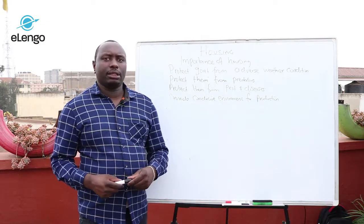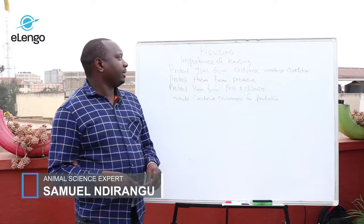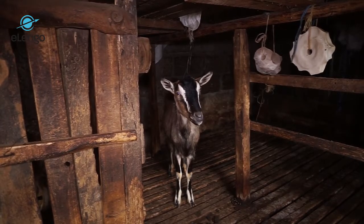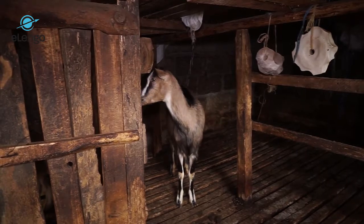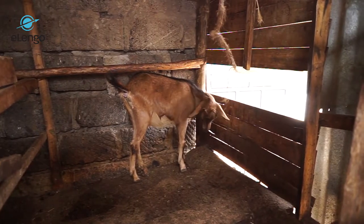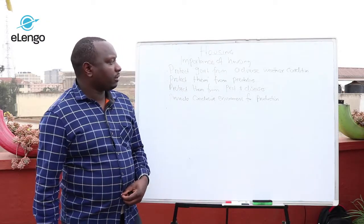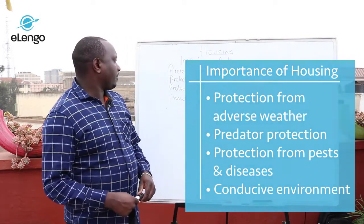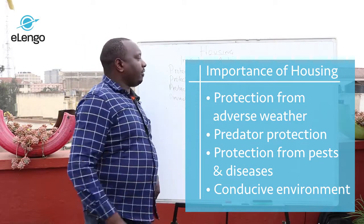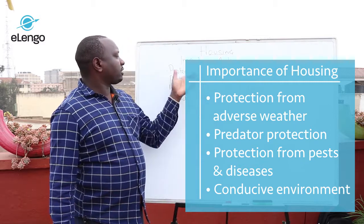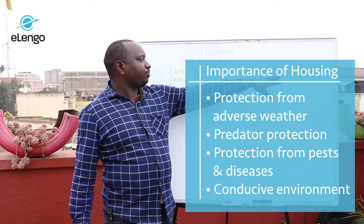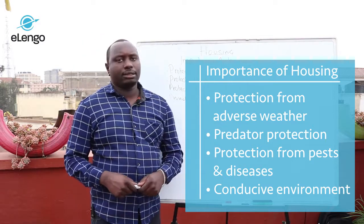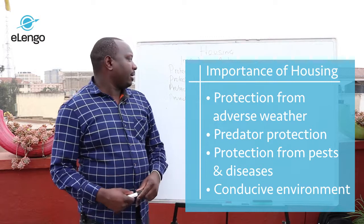Animals, just like human beings, have their own welfare, and one way to show their welfare is by housing those animals. The importance of housing animals includes, first, protecting goats from adverse weather conditions such as rain and wind. Goats are very prone to pneumonia, so if you expose them to wind and rain they might become infected. Another reason is to protect them from predators.